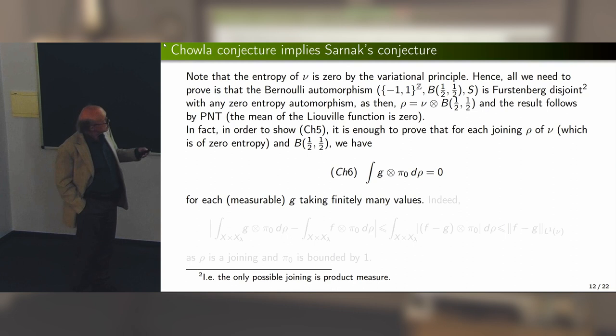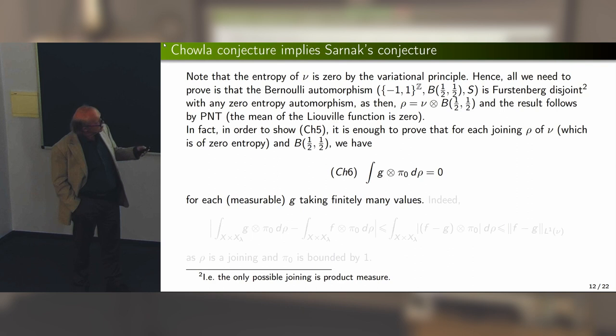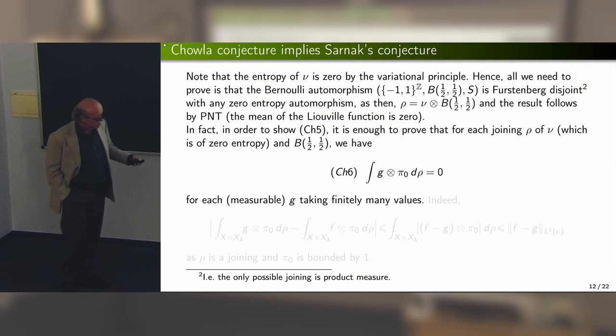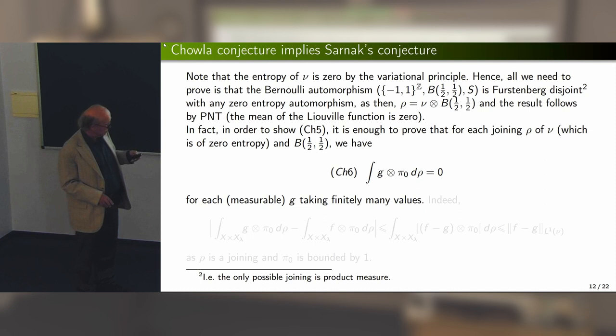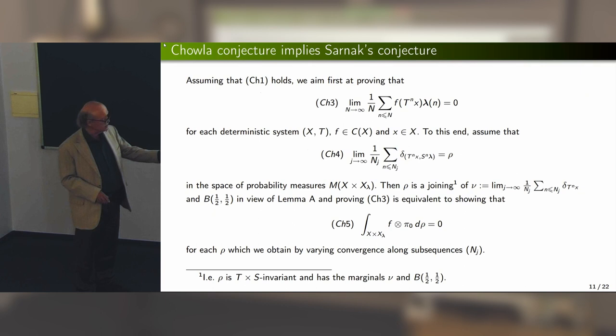The crucial fact: the Bernoulli system is disjoint, in the sense of Furstenberg, from any zero-entropy automorphism. Disjointness means the only joining between these two transformations is the product measure. If the measure is the product measure, then the integral of a tensor product of functions is just the product of the integrals, and one of these integrals vanishes by the prime number theorem.